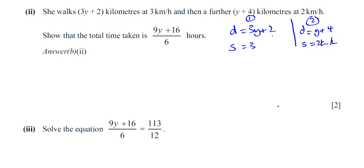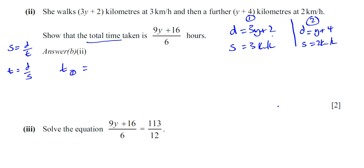They gave us information about the speed and the distance, and they're asking us to find the time. How do we link speed, distance, and time? Speed is equal to distance over time, therefore time is equal to distance over speed. So the time for the first part of the journey is distance over speed, which is 3y plus 2 divided by 3. And the time for the second part is y plus 4 divided by 2.